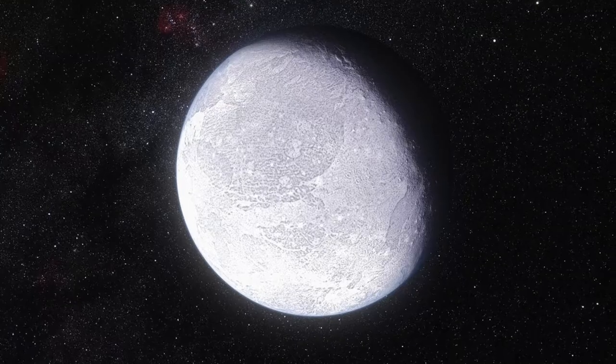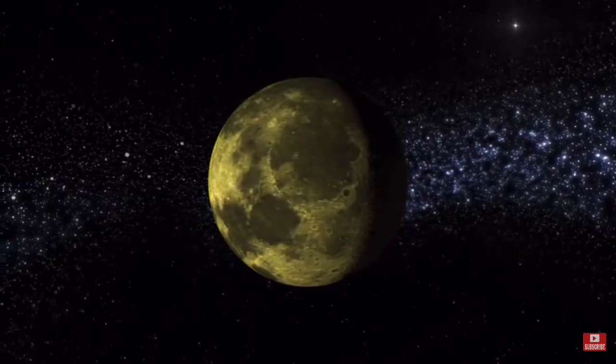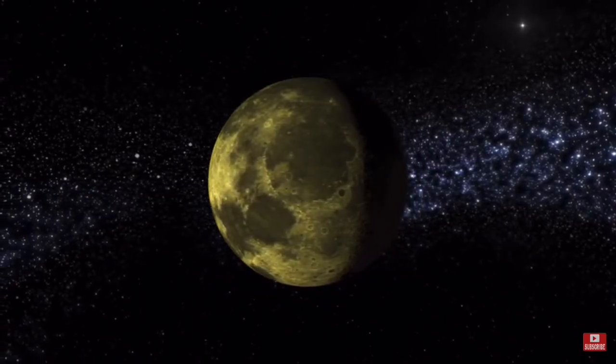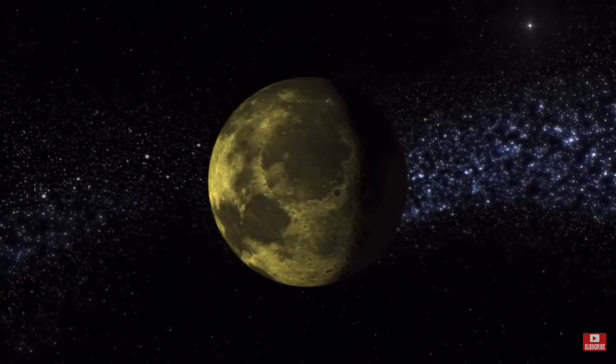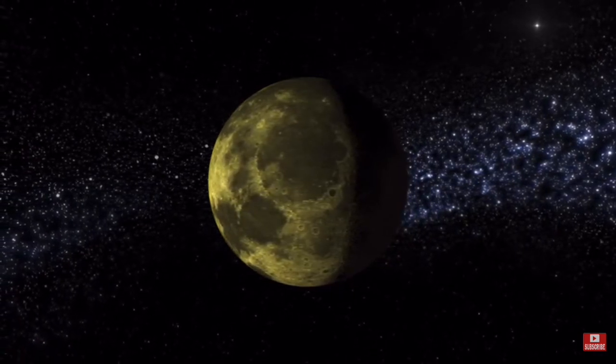After that, we have 10th planet, which is about Eris, which is the second largest dwarf planet behind Pluto. Since it also orbits the sun, some call it the 10th planet in the solar system.